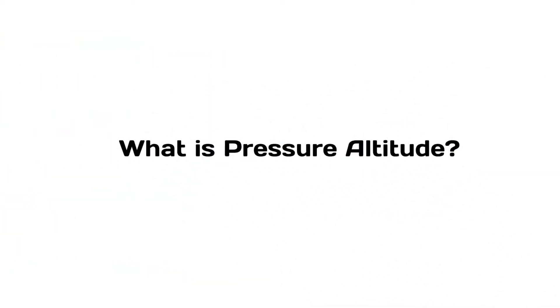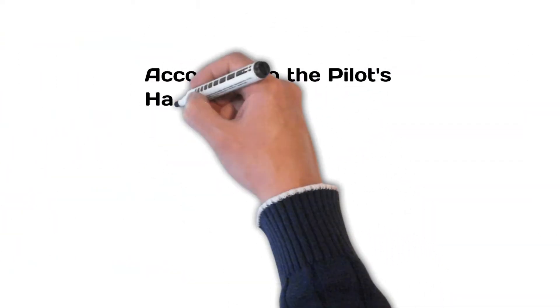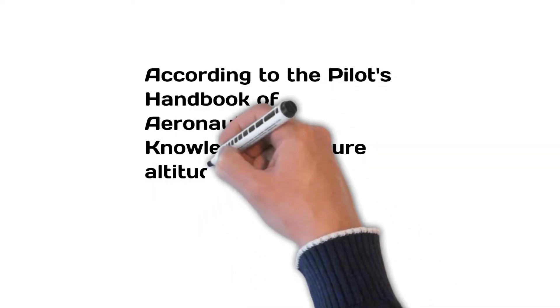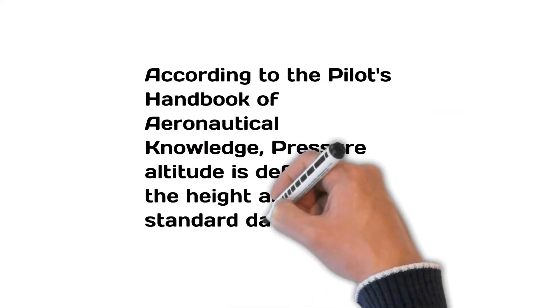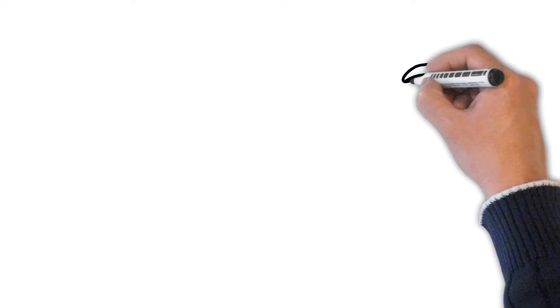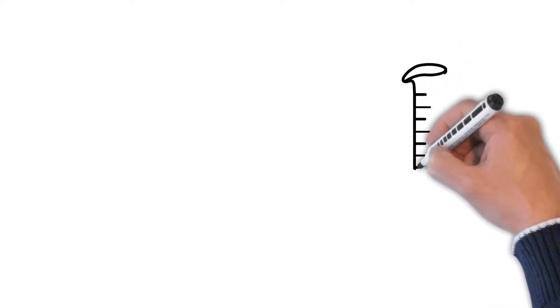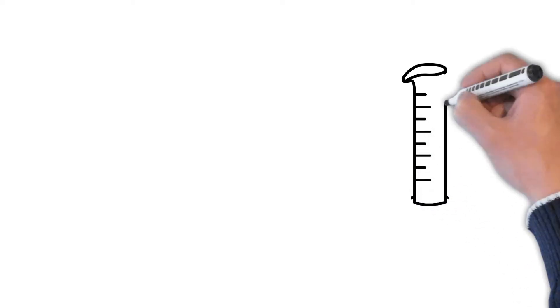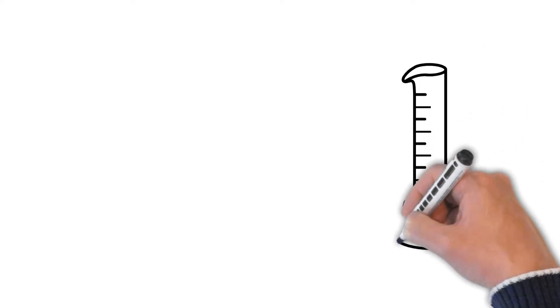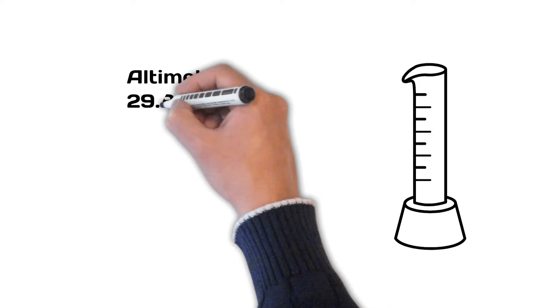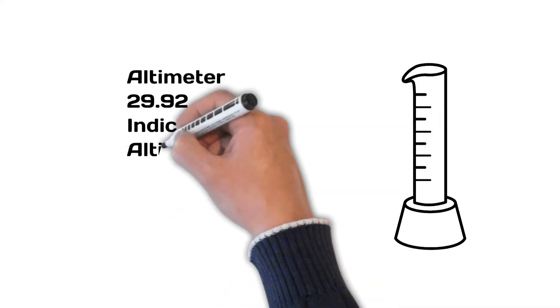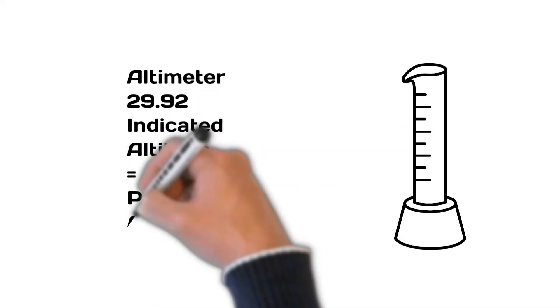What is pressure altitude? Pressure altitude is defined as the height above the standard datum plane. The altimeter is essentially a sensitive barometer calibrated to indicate altitude in the standard atmosphere. At the standard altimeter setting of 29.92, the indicated altitude is equal to the pressure altitude.